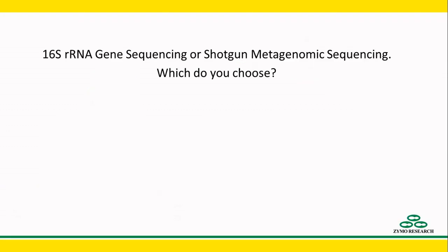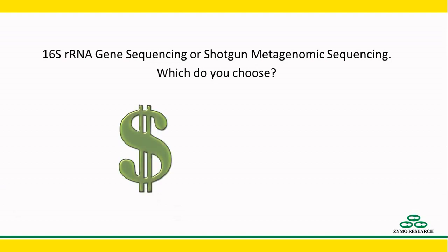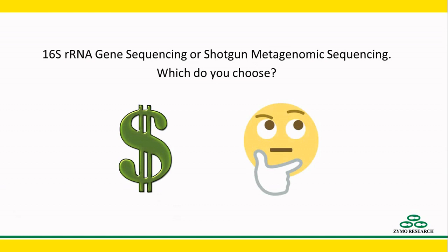The choice between 16S and shotgun sequencing is a major decision for a microbiomics study. When I've discussed the topic with researchers, the general assumption is that the only factor in this decision is budget. But there are many more factors to consider and we'll go over these. But first, let's go over some basics.